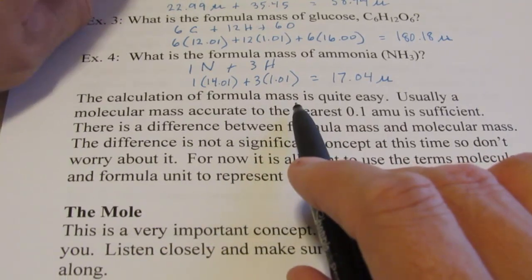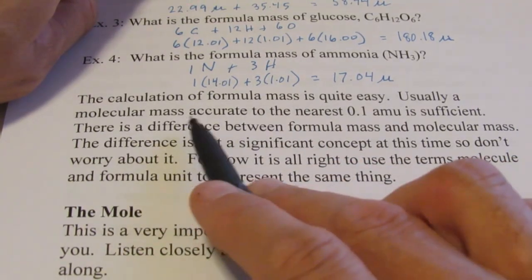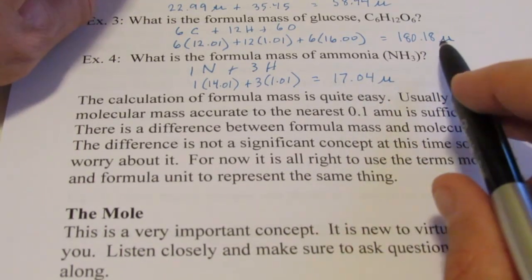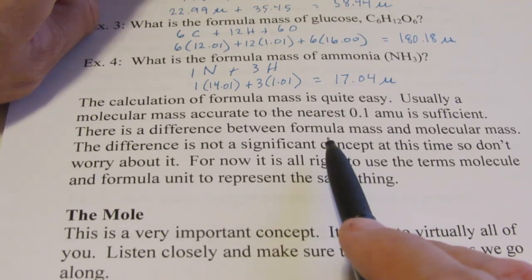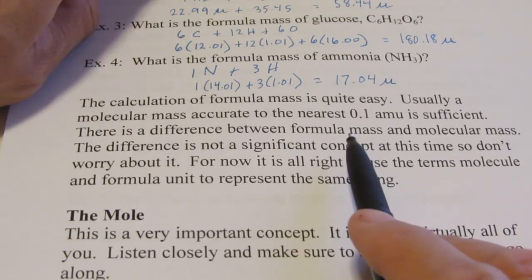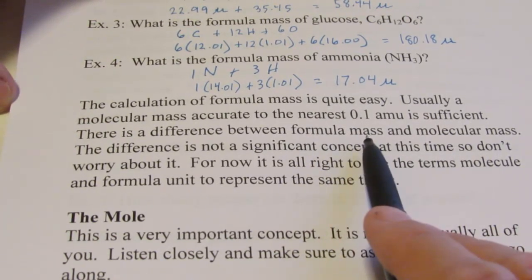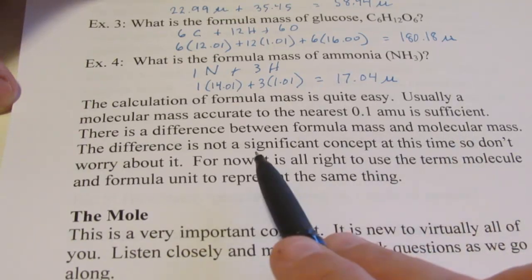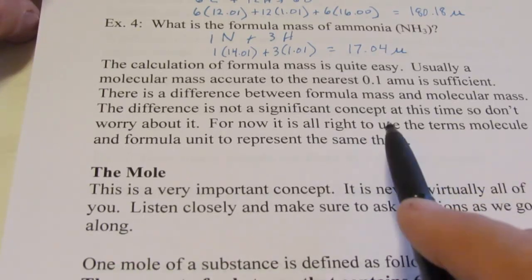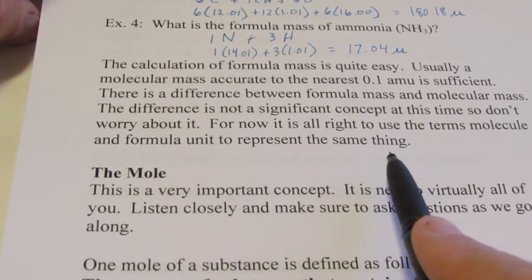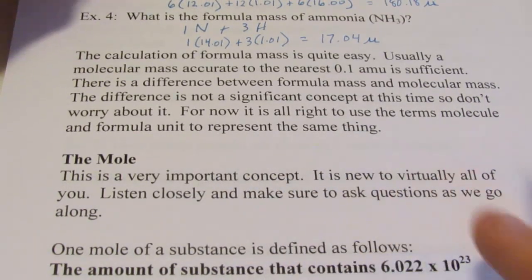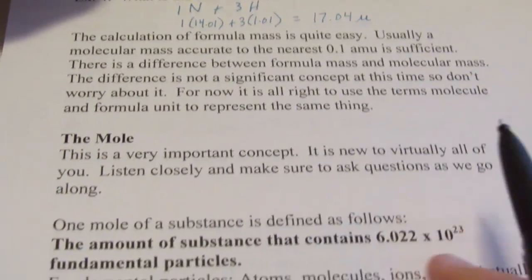That calculation of formula mass is quite easy. Usually a molecular mass accurate to the nearest tenth is sufficient, though I went to the nearest hundredth here. Remember there's a difference between formula mass and molecular mass, but it's not too significant at this time. For now it's alright to use the terms molecule and formula unit to represent the same thing.